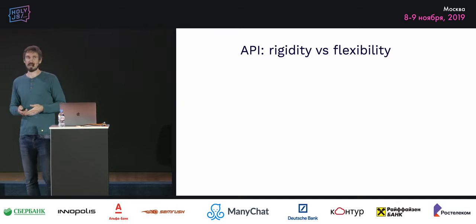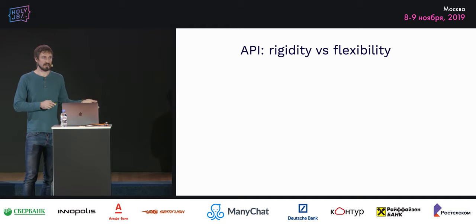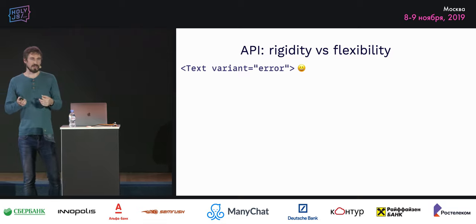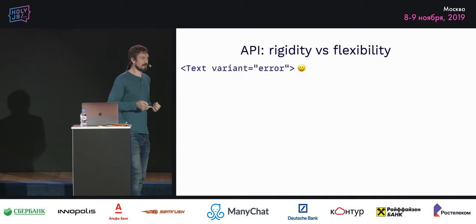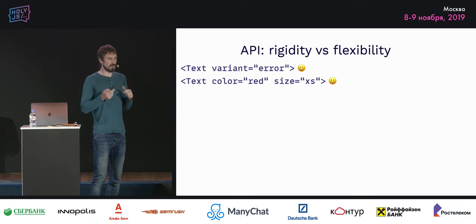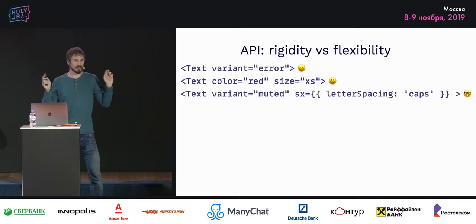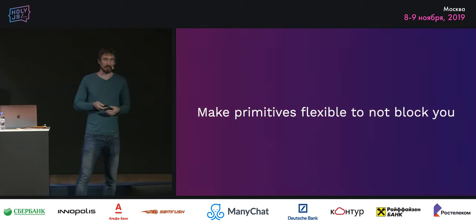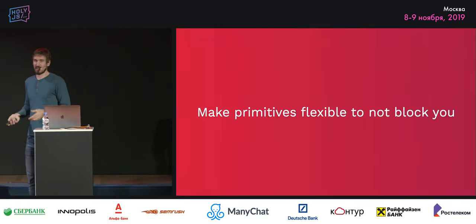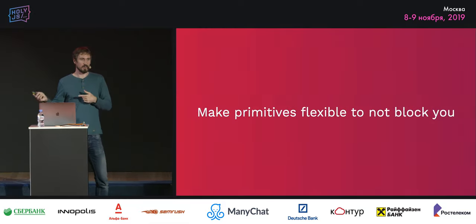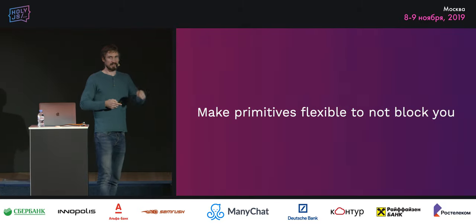The next consideration is rigidity versus flexibility. You could go all the way with variants and make the system super rigid, but then it'll be hard to do things you didn't account for originally. Inevitably someone will say 'on that screen we need a slightly different font style.' I think you should provide both — or even a special prop that signals a one-off exception. It's much easier to catch those during code reviews. Make primitives flexible enough to not block you.